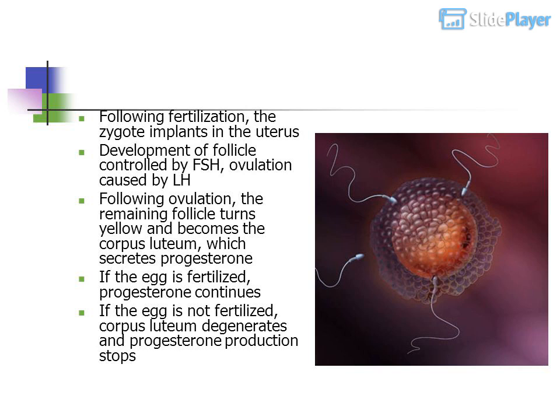Development of the follicle is controlled by FSH. Ovulation is caused by LH. Following ovulation, the remaining follicle turns yellow and becomes the corpus luteum, which secretes progesterone. If the egg is fertilized, progesterone continues. If the egg is not fertilized, the corpus luteum degenerates and progesterone production stops.